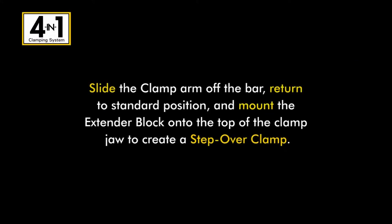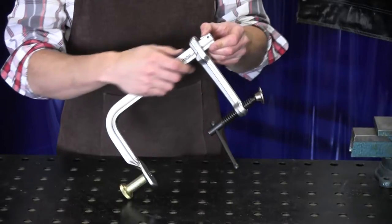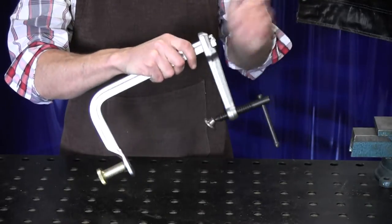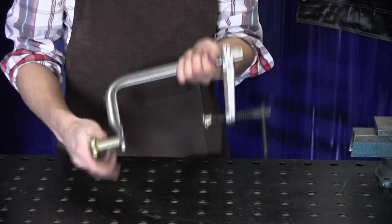Now watch me turn my 4-in-1 clamp into a step-over clamp. I'm going to remove the clamp arm and slide the clamp arm back onto the bar in the standard position.